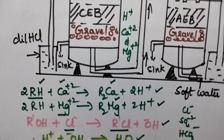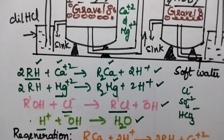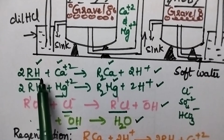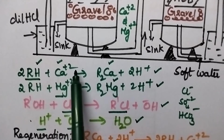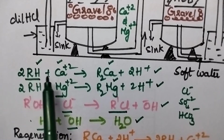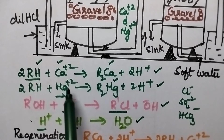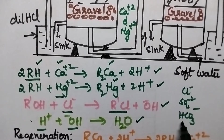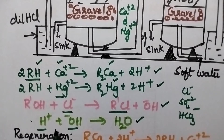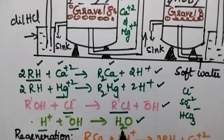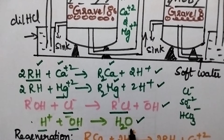The H+ and OH- ions result in the formation of pure water. When hard water is passed through the cation exchange bed, the H+ ions are replaced by calcium and magnesium ions, while Cl-, sulfate, and bicarbonate ions are replaced by OH- ions. Finally, it results in the formation of H2O, which is completely devoid of all types of ions. Hence this water is called deionized water or demineralized water.